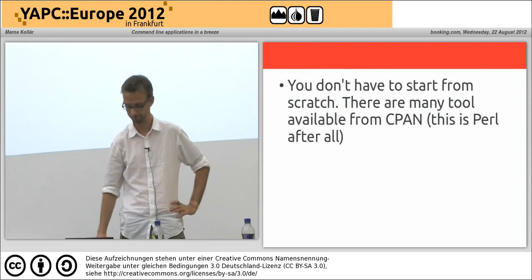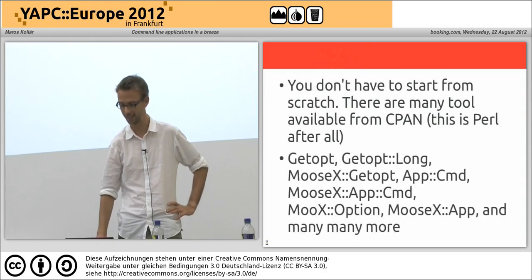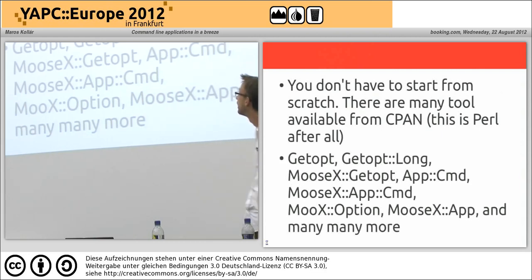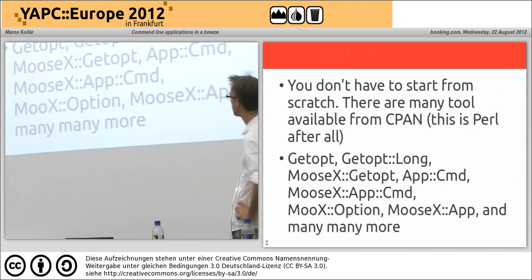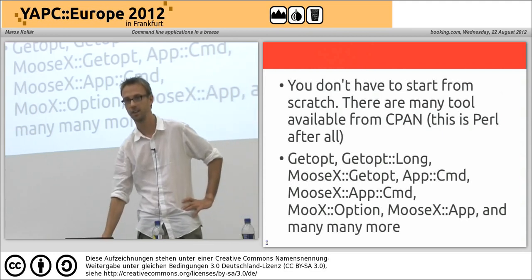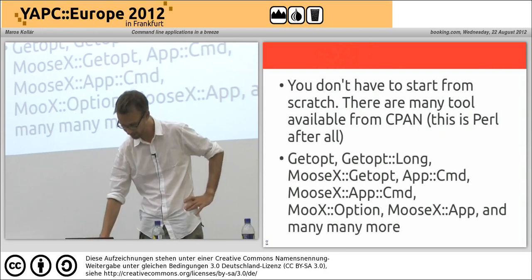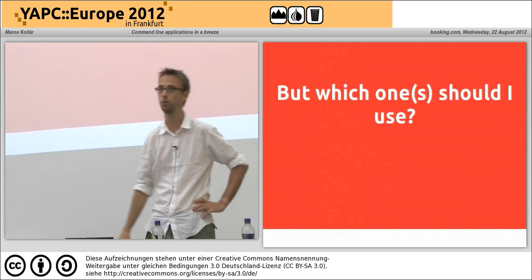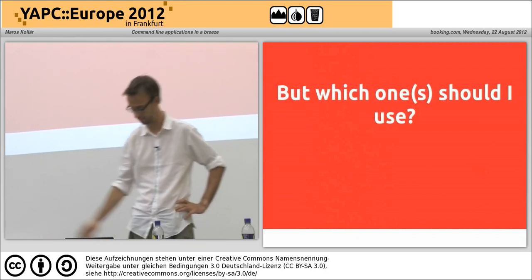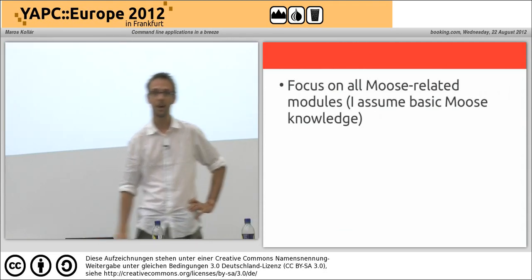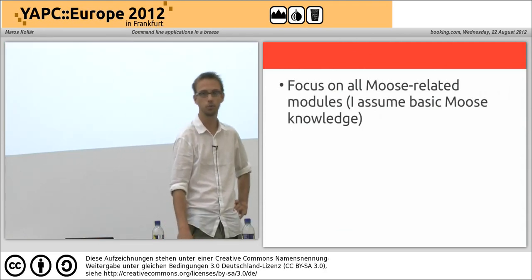This is Perl after all, and as you can see there are quite a few modules: Getopt, Getopt::Long, MooseX::Getopt, MooseX::App::Cmd, MooseX::App, and many more, which I've decided to ignore here. Of course, which ones should I use? There are several dozens of modules on CPAN. I will focus on the Moose-related modules.